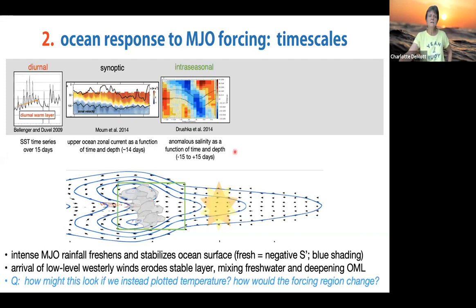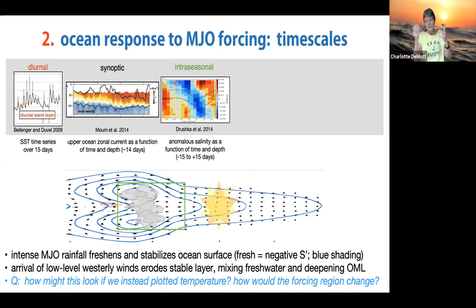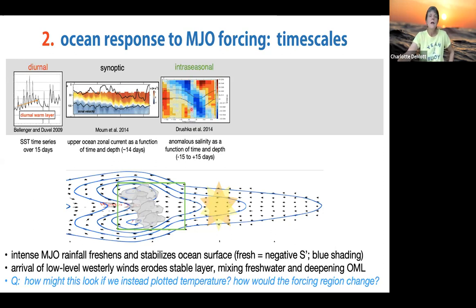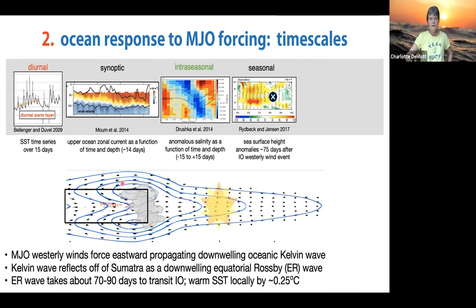On intraseasonal timescales, this figure from Kyla Drushka's paper shows anomalous salinity as a function of time on the x-axis and depth on the y-axis, from minus 15 to plus 15 days about maximum rainfall. As MJO rainfall increases and the disturbance moves from west to east, a fresh pool forms on the upper ocean. As the westerly wind burst starts to form, this gets mixed downward—and this forcing occurs in the part of the MJO where it's raining.